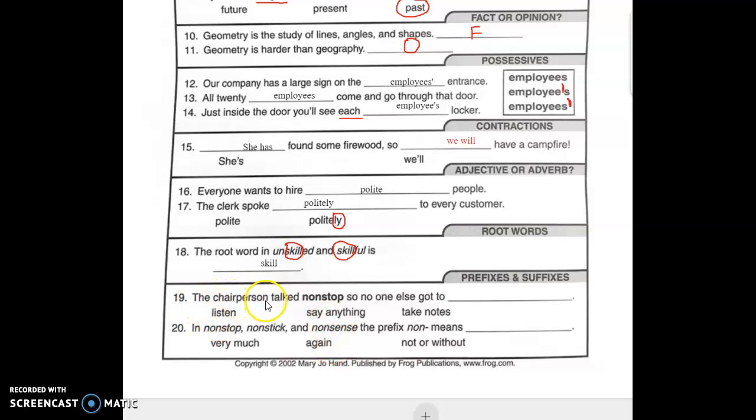The chairperson talked nonstop. So no one else got to blank. Well, if you talk nonstop, it means you don't ever stop talking. So no one else got to say anything. I'm just going to circle the answer here. Nonstop means no one else gets to say anything because you're talking the whole time.